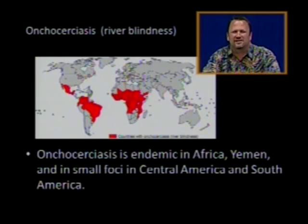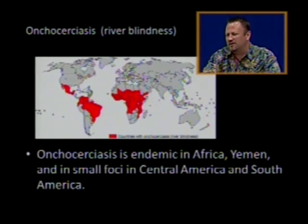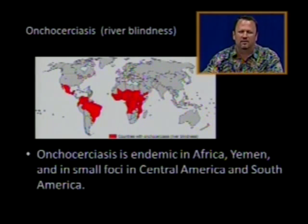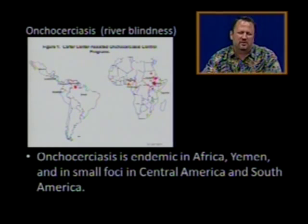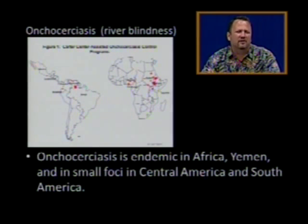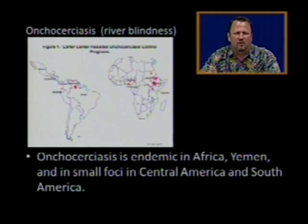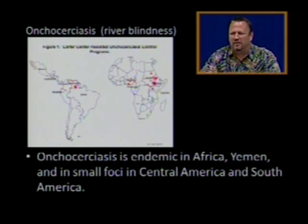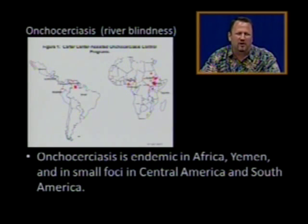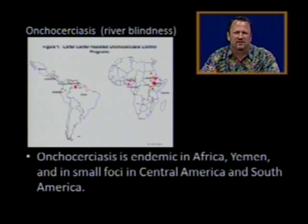Onchocerciasis is endemic in Africa, Yemen, and small parts of Central America and South America. Remember, it stays along rivers — there are just very small patches in the world where onchocerciasis is endemic: Africa, Yemen, and small foci in Central America and South America.